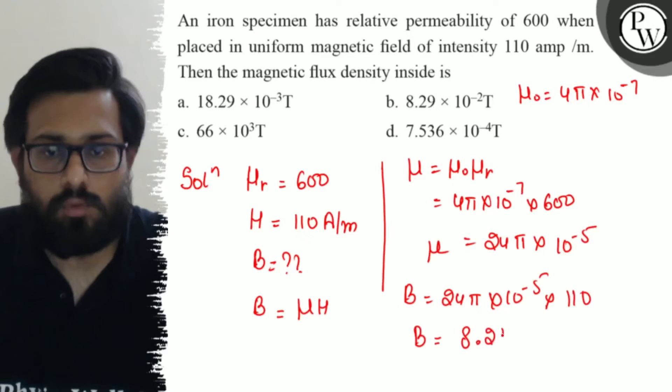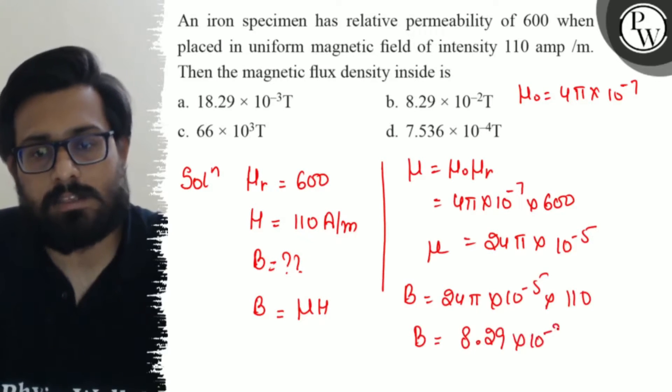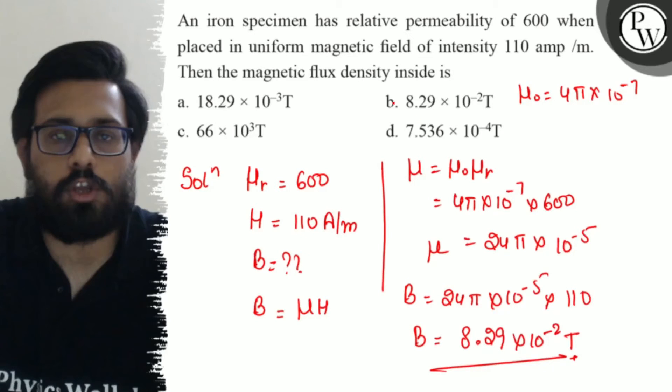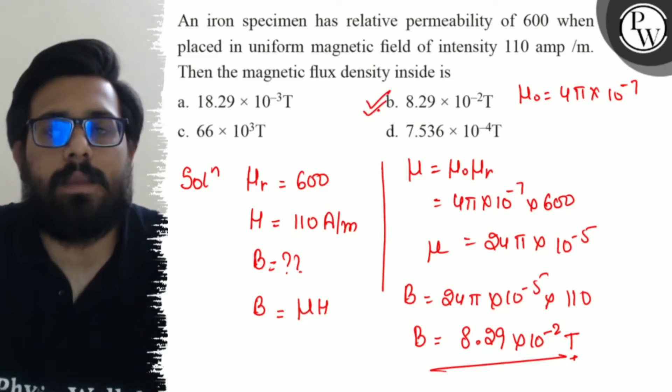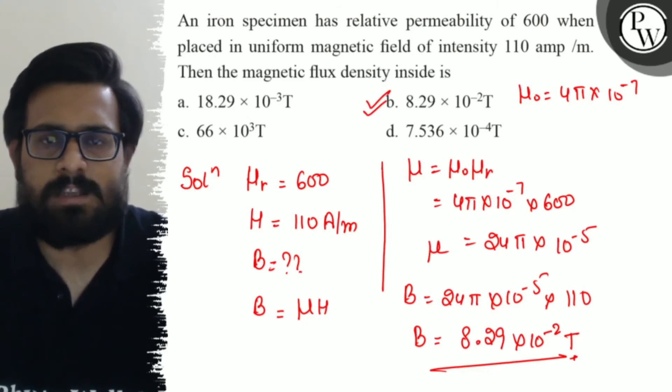So all in this part you will get a value of 8.29 into 10 to the power minus 2 tesla. So this is your final answer which is an option number B.